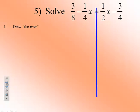Then we need to determine what variable we want to move. Do we want to move the negative 1 fourth x or do we want to move the 1 half x? Let's first of all clear out the fraction by multiplying through by the least common denominator.